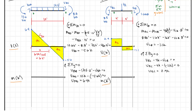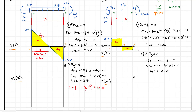Now we have everything we need to draw our moment diagram. I'll label this point zero, point one, and point two on beam AB. Similarly over here, I'll label point three, point four, and point five. Area A1 is just going to equal one half of 6.4 feet times 6.4 kips, giving us a value of 20.48 kip-feet. Area A2 is going to be one half of 5.6 feet times negative 5.6 kips, giving us minus 15.68 kip-feet.